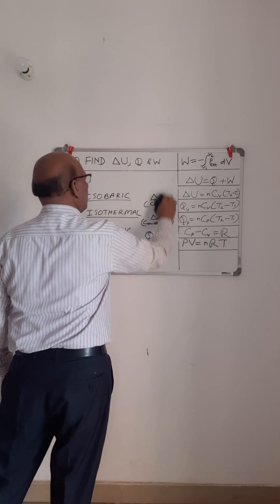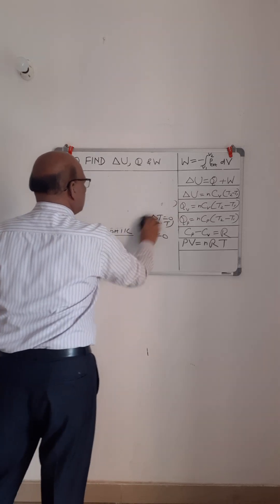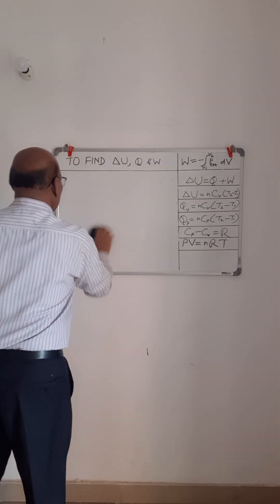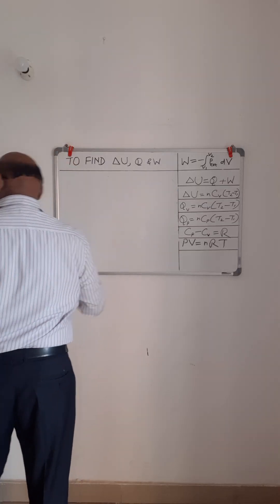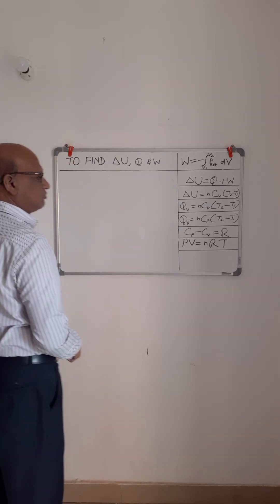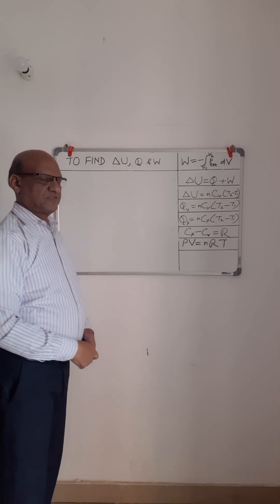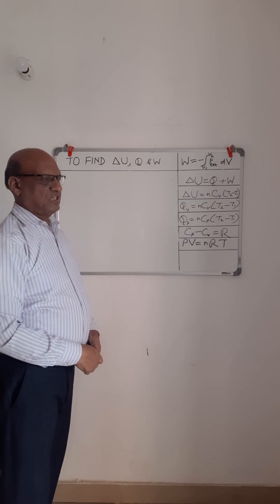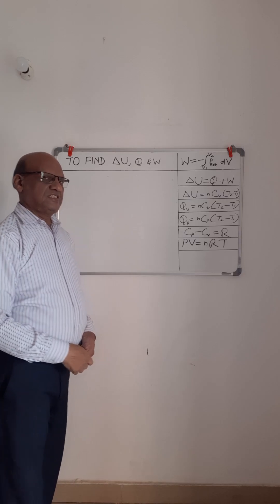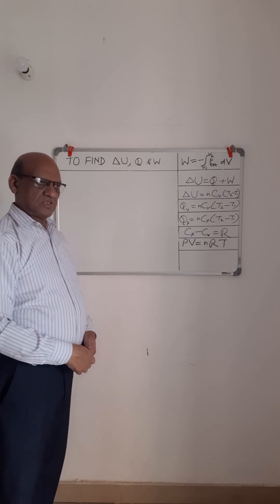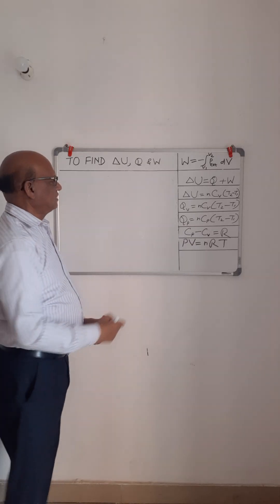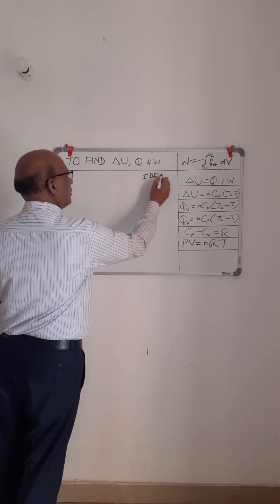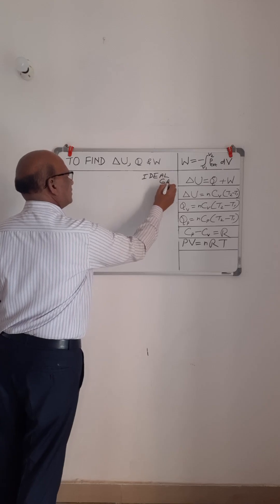We will find Q and W as per the process: if it is an expansion process, work is done by the system; if the gas is compressed, work is done on the system. The system we have considered is an ideal gas.